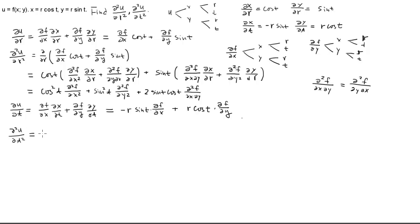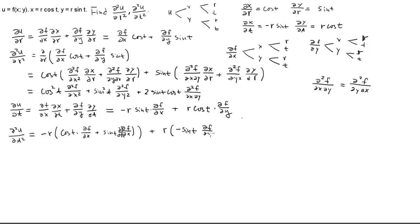Applying the product rule carefully: for the first term −r·sin(t)·f_x, we differentiate using product rule. The derivative of sin(t) is cos(t), kept times f_x unchanged; plus sin(t) times the derivative of f_x with respect to t. For the second term r·cos(t)·f_y, the derivative of cos(t) is −sin(t) times f_y, plus cos(t) times the derivative of f_y with respect to t. These inner derivatives f_x and f_y still require the chain rule.